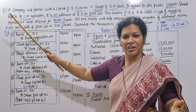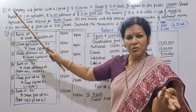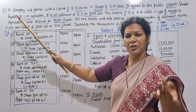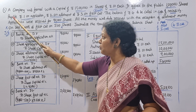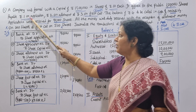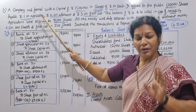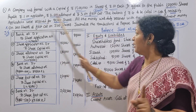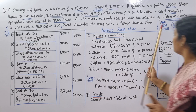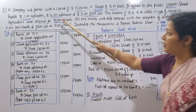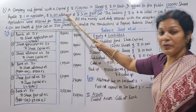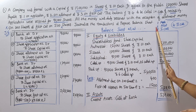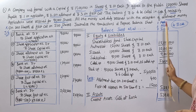The shares are offered in installments. On application: 1 rupee per share. On allotment: 2 rupees per share.